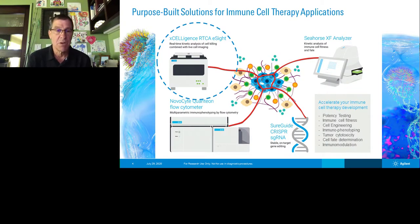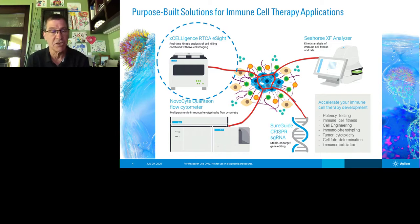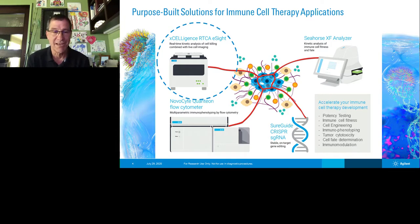Last year we provided our inaugural set of what we refer to as purpose-built solutions for targeting the immune system with four instruments. They are applicable in many indications, but we've been working very hard on solutions and protocols that can specifically address questions in the immuno-oncology space. The top two are our label-free real-time cell analysis platforms that give you kinetic information in a more relevant setting. Below are flow cytometry and gene editing technologies where we believe we've made some great innovation.